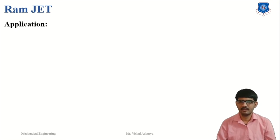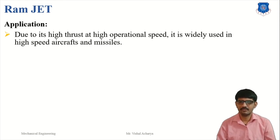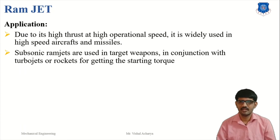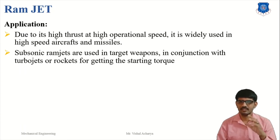The main application of the ramjet — due to its high operational speed — is that it is widely used in high-speed aircraft and missiles. Subsonic ramjets are used as target weapons in conjunction with a turbojet or rocket for getting the starting torque.